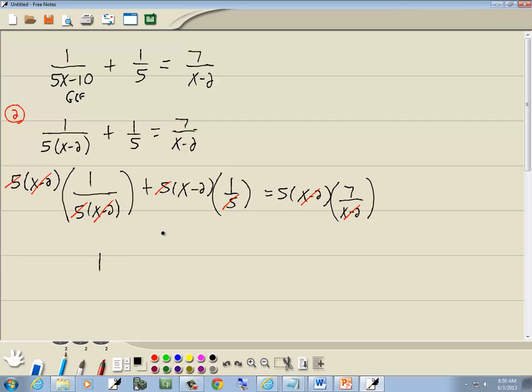Those are gone, left from 1. And here we've got 1 times x minus 2, which is just x minus 2. Over on this side we've got 5 times 7, which is 35.